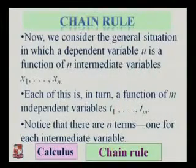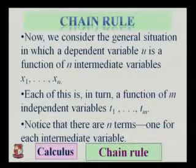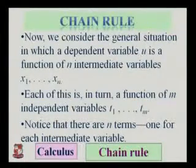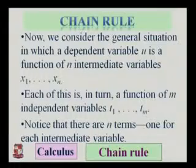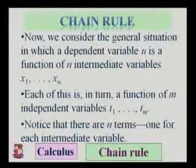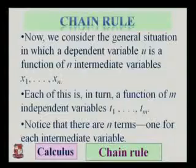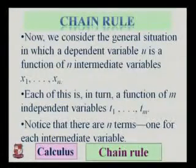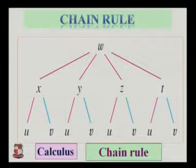Now we consider the general situation in which our independent variable u is a function of n independent variables x1 to xn. Each of these is in turn a function of m independent variables t1, t2 up to tm. We notice that there are n terms, one for each intermediate variable. So x1 to xn are intermediate variables.